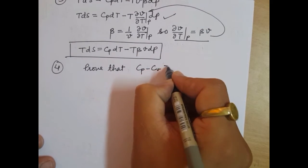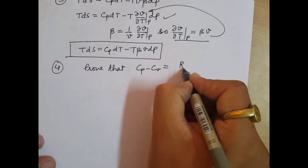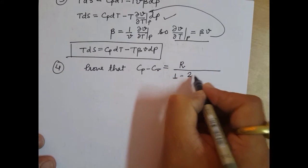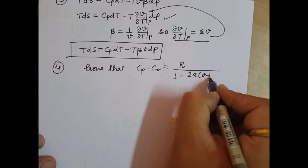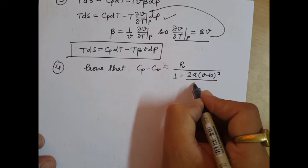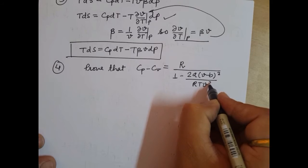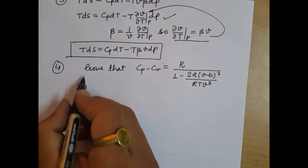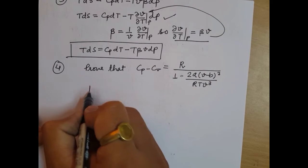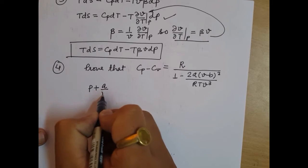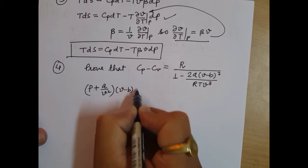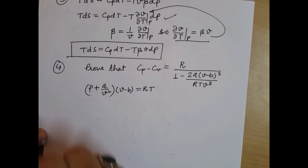The problem says: prove that Cp minus Cv is equal to R upon 1 minus 2A/V minus V squared by RTV cubed, for the Van der Waals gas equation. The Van der Waals gas equation is: P plus A by V squared, into V minus B, is equal to RT.